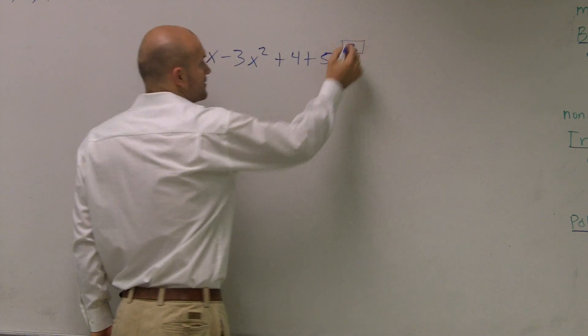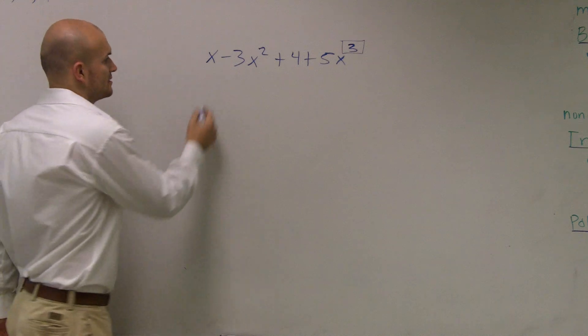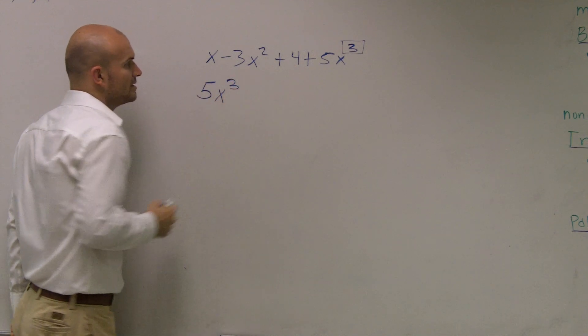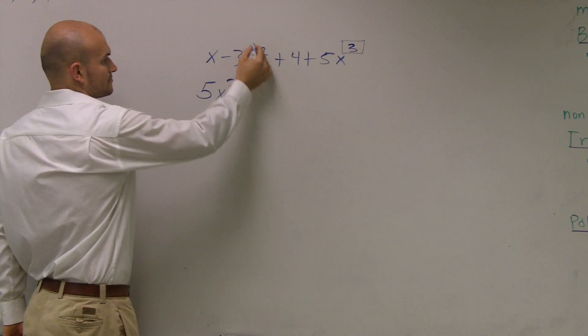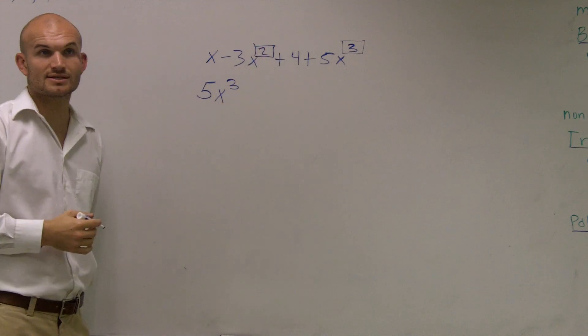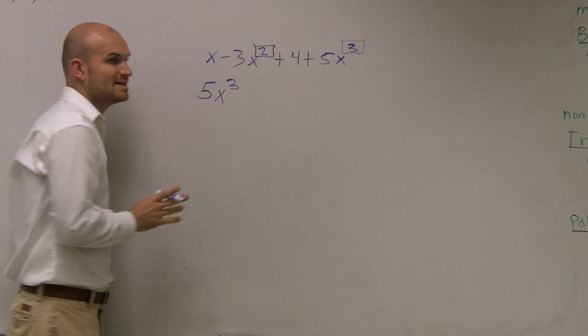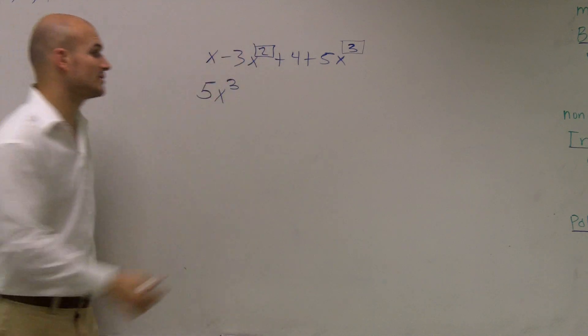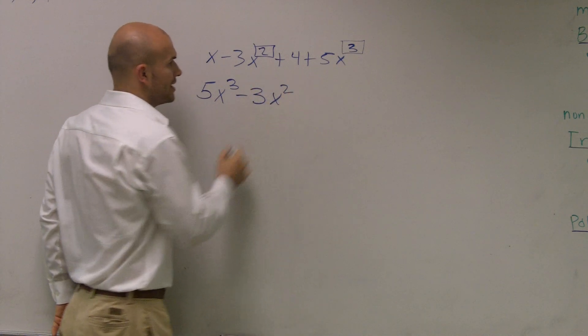And you can say, I'll say, this 5x to the third is the highest or the greatest. So I'll say 5x to the third. Then I look to find the next one. My x squared is the next one, right? So then this term comes next. Remember, this is a negative 3x. So it becomes a negative 3x squared.